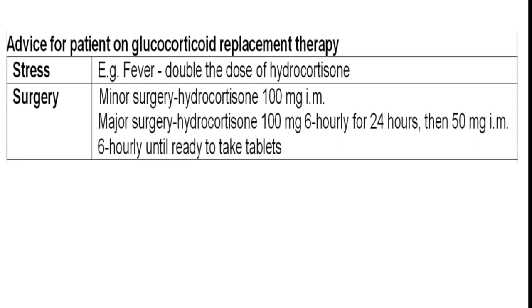After the first 24 hours of major surgery, reduce to 50 mg IM every six hours until the patient is ready to resume oral tablets. These are general guidelines — specific surgical guidelines may vary. The key principle is to double the hydrocortisone dose in any stressful condition, and during major surgery give 100 mg every six hours for 24 hours, then 50 mg six-hourly for the next two to three days. This concludes the discussion on acute adrenal crisis management in the emergency room.